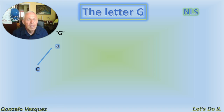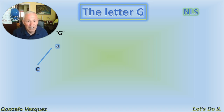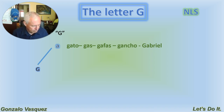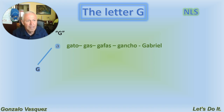Here are the examples. La G con la A — the letter G with the vowel A sounds 'GA.' For example: gato, which means cat. Gas — same as gas in English. Gafas, which means glasses — sunglasses or reading glasses.